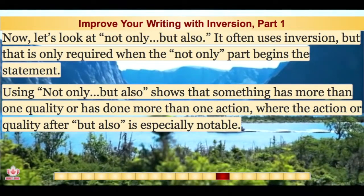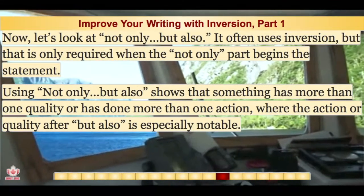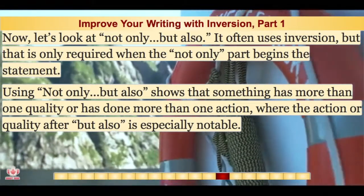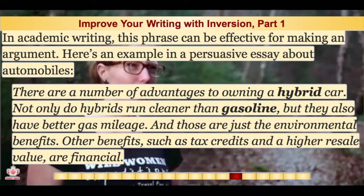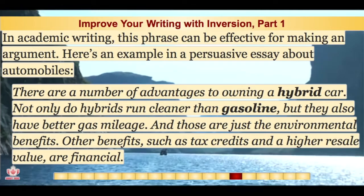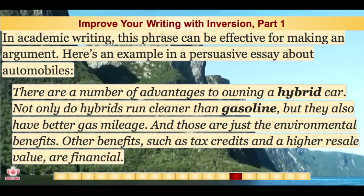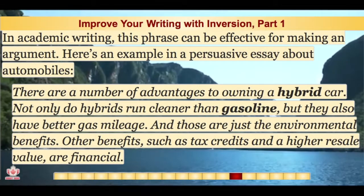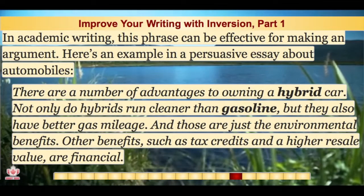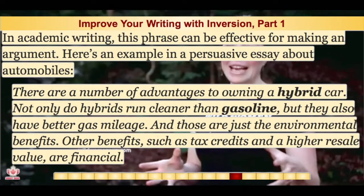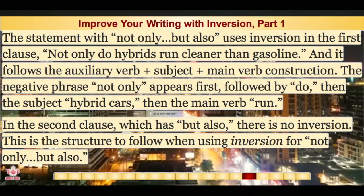Now let's look at "not only but also." It often uses inversion, but that is only required when the "not only" part begins the statement. Using "not only but also" shows that something has more than one quality or has done more than one action, where the action or quality after "but also" is especially notable. In academic writing, this phrase can be effective for making an argument. Here's an example in a persuasive essay about automobiles: "There are a number of advantages to owning a hybrid car. Not only do hybrids run cleaner than gasoline, but they also have better gas mileage, and those are just the environmental benefits. Other benefits, such as tax credits and a higher resale value, are financial."